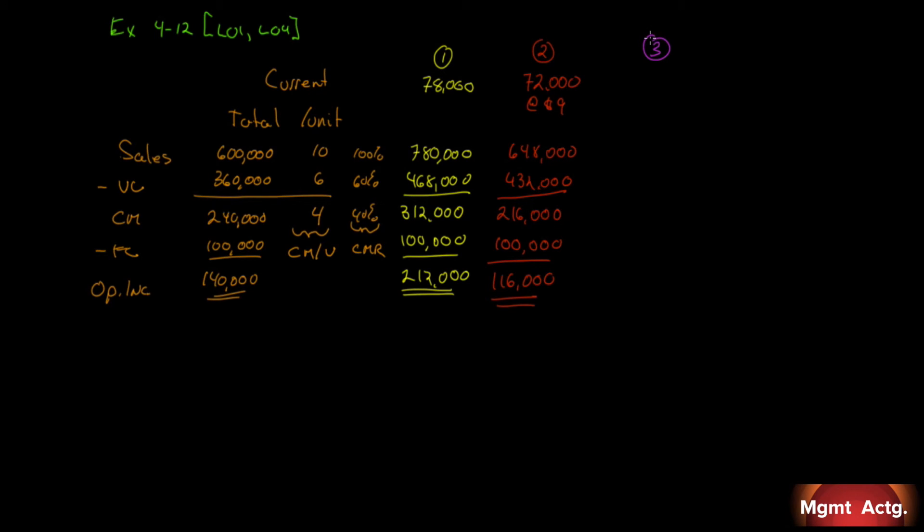Scenario number three: the selling price increases by a dollar per unit, fixed expenses increase by $20,000, and the number of units sold decreases by 10%. If we have 60 to start, a decrease of 10% brings us down to 54,000 units. Our sales price goes from $10 to $11. We're going to sell 54,000 units at $11, which is $594,000. 54,000 times the original $6 variable cost is $324,000, giving us $270,000 in contribution margin. Fixed costs increased by $20,000 to $120,000, leaving us with $150,000 on the bottom line.